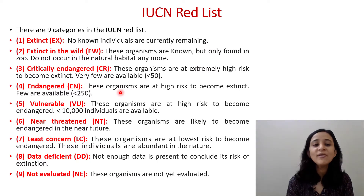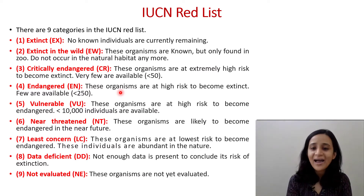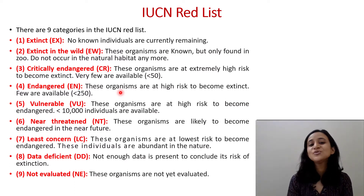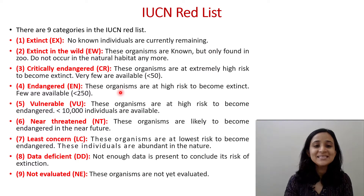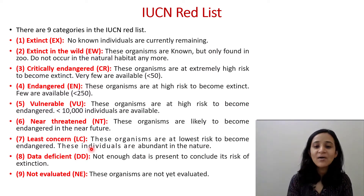Next is Vulnerable (VU) — these organisms are at high risk of becoming endangered, with fewer than 10,000 individuals available. Next is Near Threatened (NT) — these organisms are likely to become endangered in the near future. Then is Least Concern (LC) — these organisms are at lower risk of becoming endangered.